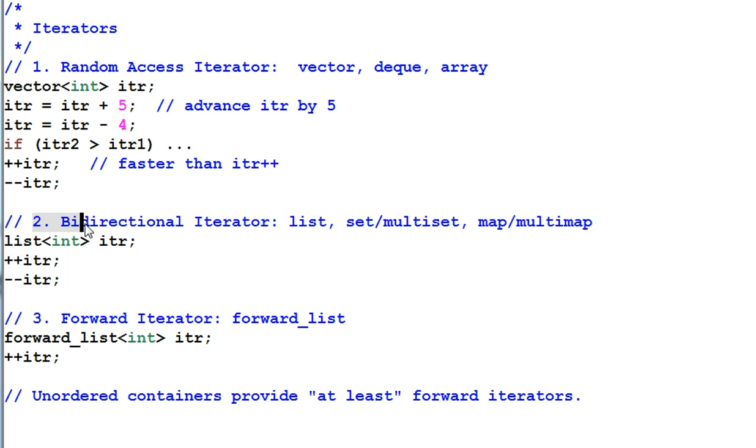Second category is bidirectional iterator. With bidirectional iterator, I can increment it, I can decrement it, but I cannot add or subtract a value to it. I cannot compare two iterators. And here are the containers that provide bidirectional iterators: basically the list plus the associative containers.